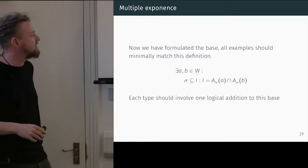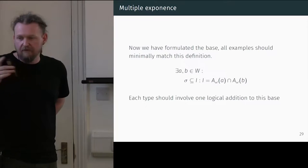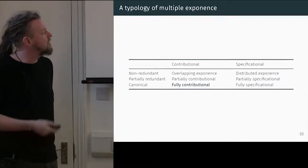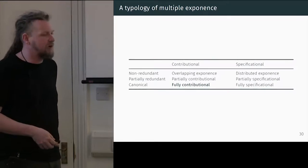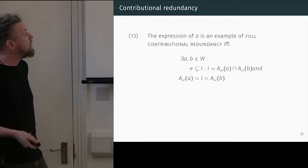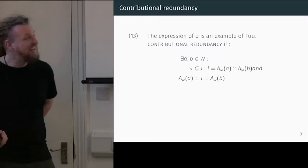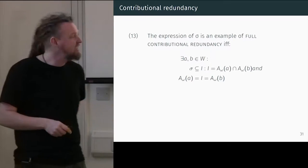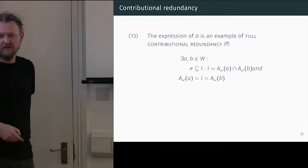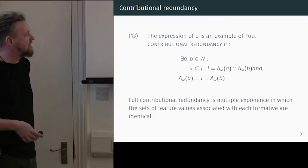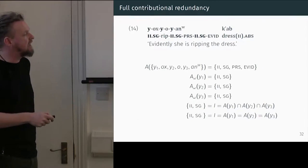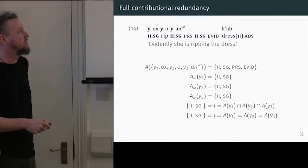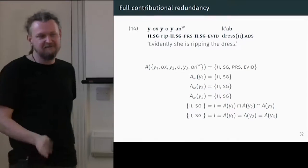Now all of our examples need to be minimally multiple exponents. From this we can create a very careful typology where every type involves a single logical alteration to this simple definition. In terms of contributional redundancy, for full contributional redundancy: the expression of some category sigma is an example if and only if it's multiple exponents, and the two sets of formatives have to be identical — that is, the A-omega of a is equal to A-omega of b. Back to our Batsby example: we've already proved it's multiple exponents. A-omega y1 equals A-omega y2 equals y3. Therefore, this is fully contributionally redundant — the set of features associated with them are identical.